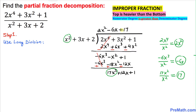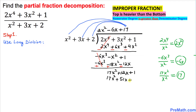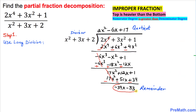We distribute 17 with all the divisor terms and get 17x² + 51x + 34. We change the signs — all become negative — and cancel. The result gives us a remainder of −39x − 33. The degree of this remainder is less than the degree of the divisor, so we stop here.